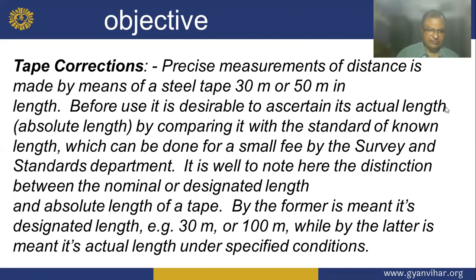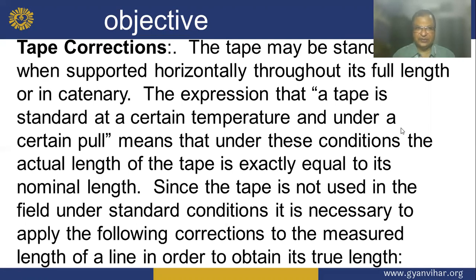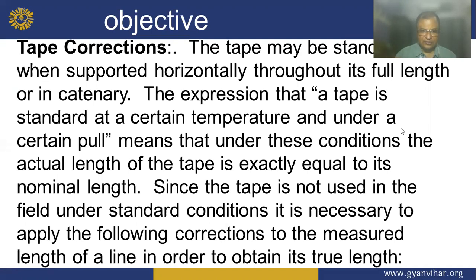By the former is meant the designated length, that is 30 meter or 100 meter, while by the latter is meant the actual length under specified conditions. The tape may be standardized when supported horizontally throughout its full length or in catenary. The expression that a tape is standardized at a certain temperature and under a certain pull means that under those conditions the actual length of the tape is exactly equal to its nominal length. Since the tape is not used in the field under standard conditions, it is necessary to apply corrections to the measured length of a line in order to obtain the true length.